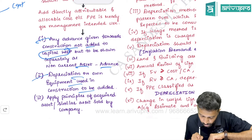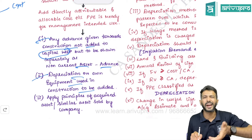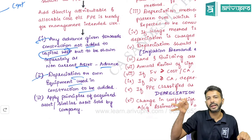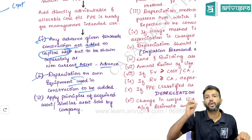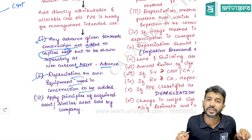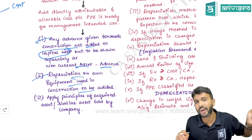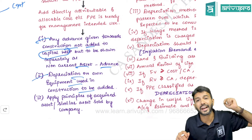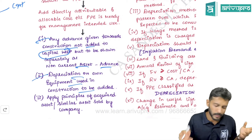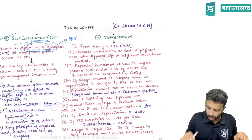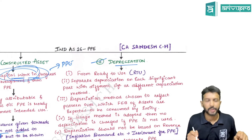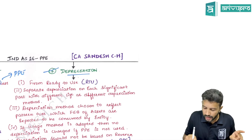Depreciation on own equipment used in construction should be added to the cost of PP as DAC. For example, if you use a bulldozer to construct a building, the bulldozer's depreciation is treated as DAC and added to the building's cost, not expensed to P&L.